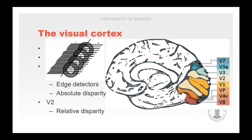As we're talking about depth perception, disparity is essential. V1 deals with absolute disparity, which integrates stimuli from both visual fields and triangulates the position of objects in the depth plane, while V2 deals more with relative disparity and the relationship between objects in space.